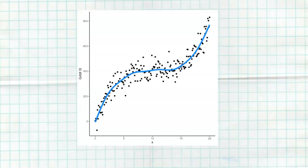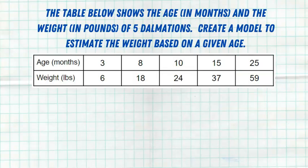Let's look at two examples. The table below shows the age in months and the weight in pounds of five Dalmatians. We want to create a model to estimate the weight based on a given age. A three-month-old Dalmatian weighs six pounds, an eight-month-old weighs 18 pounds, and so forth. We first want to take a look at this data and then find a model that represents it appropriately.